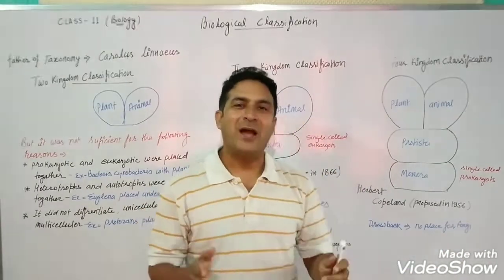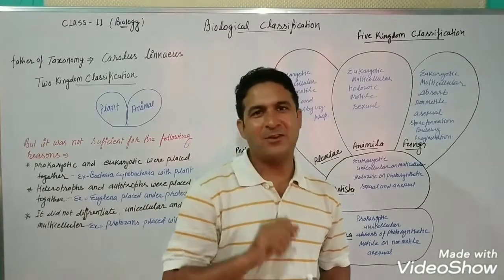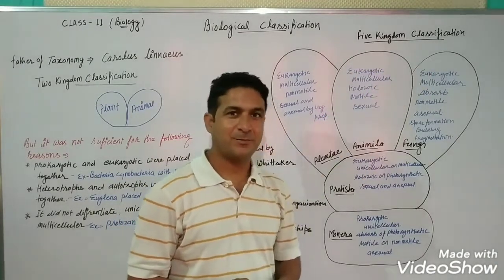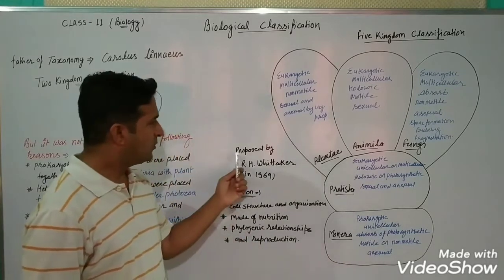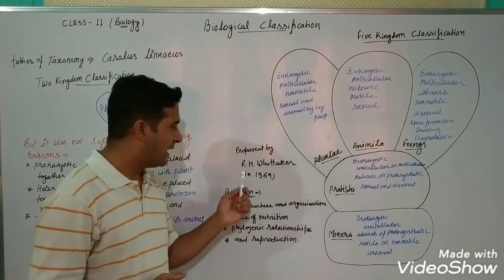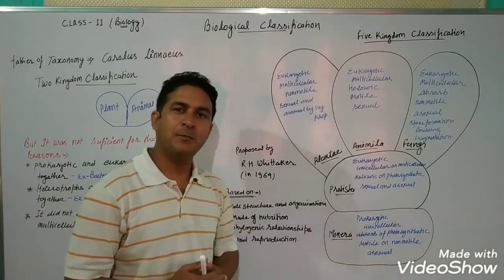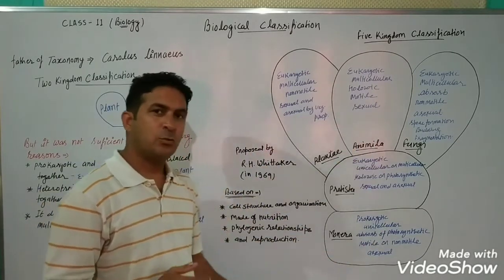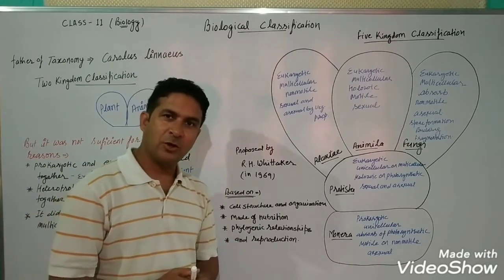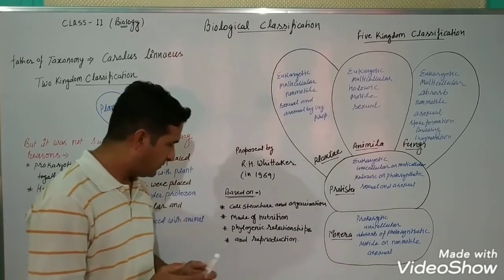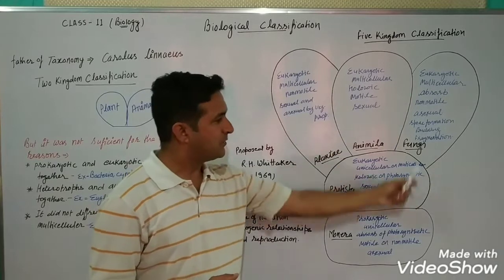Now we discuss the five kingdom classification, which gives a place to fungi. The five kingdom classification was proposed by R.H. Whittaker in 1969. It was based on four criteria: cell structure and organization, mode of nutrition, phylogenetic relationships, and mode of reproduction of the organism.